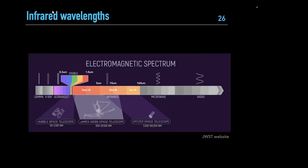Infrared time domain surveys are the focus of my portion. Most ground-based time domain surveys have focused on optical wavelengths — about 0.3 to 1 micron. Only recently have we started exploring the dynamic infrared sky, specifically between 1 and about 2.5 to 3 microns for ground-based near-infrared observations.